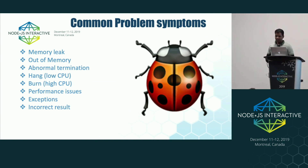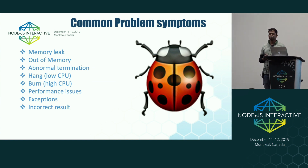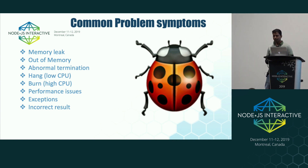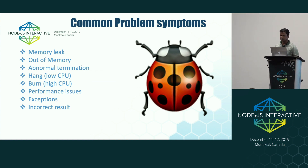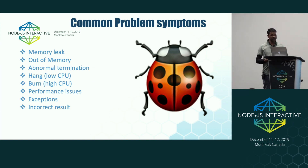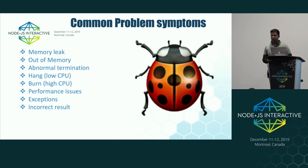Abnormal termination is again a mismatch in expectation between the programmer and the runtime. If the control flow of either the application or the virtual machine itself comes to a state where it encounters an unexpected scenario from which it cannot recover, that leads to abnormal termination. The lighter version is exceptions, where the virtual machine catches an unexpected scenario, composes it as an exception, and throws it to the caller. In either case, the program logically cannot continue.